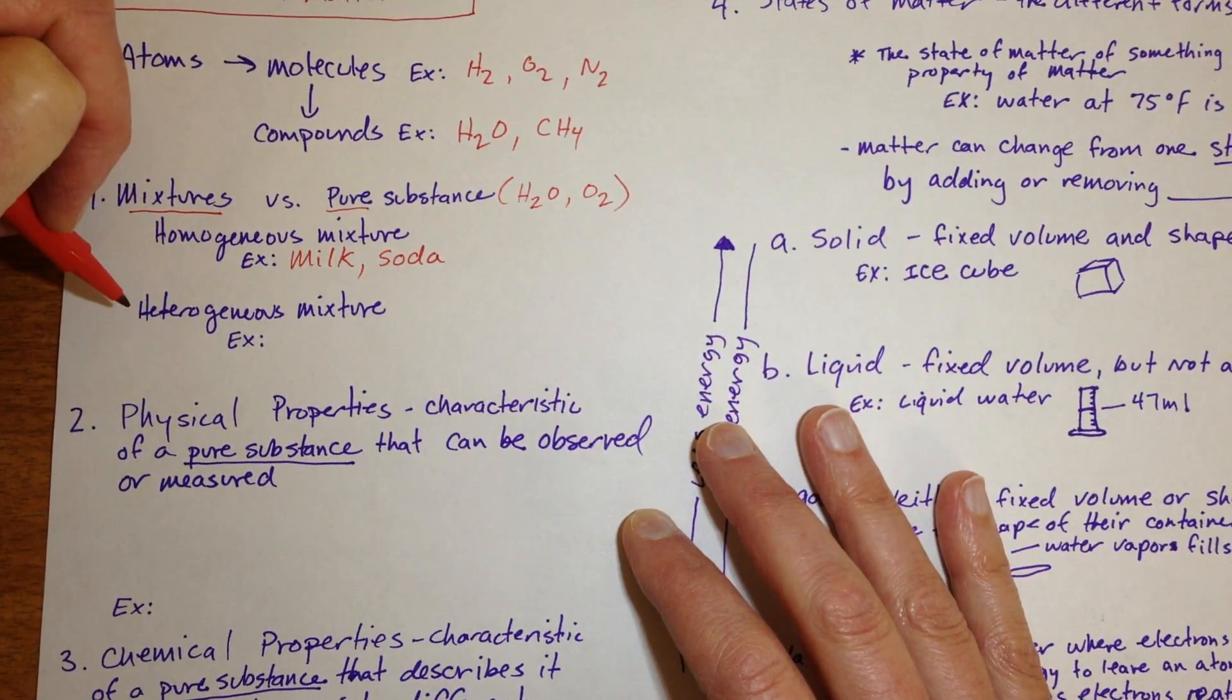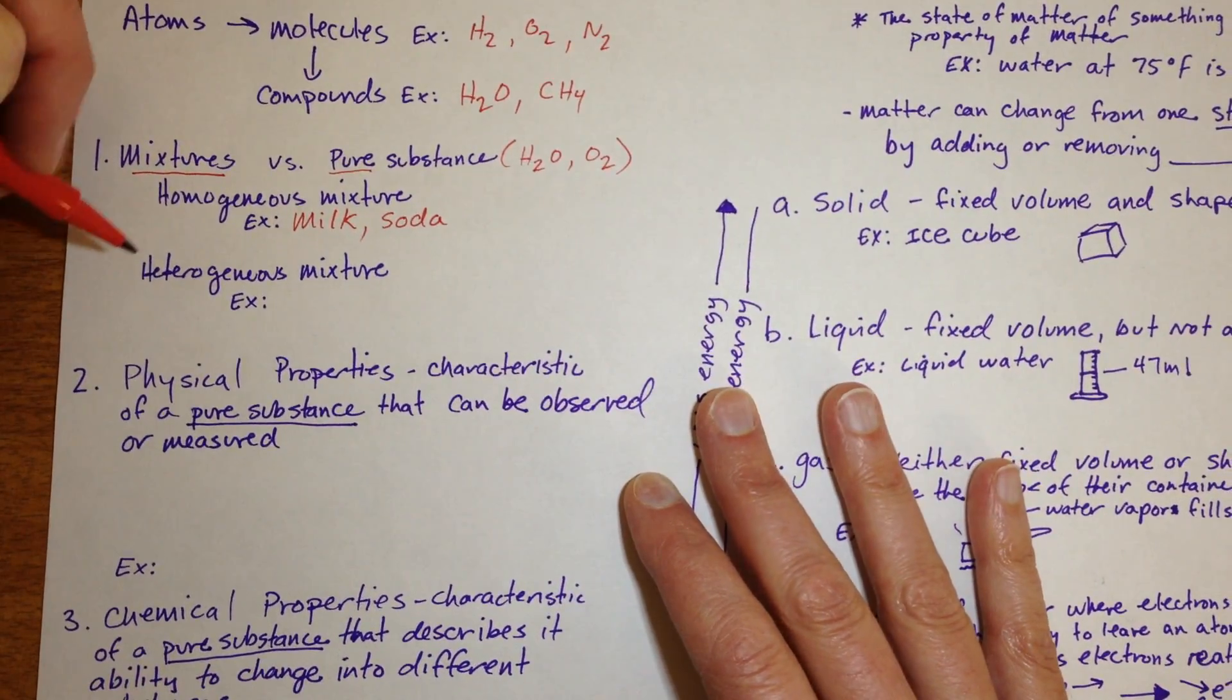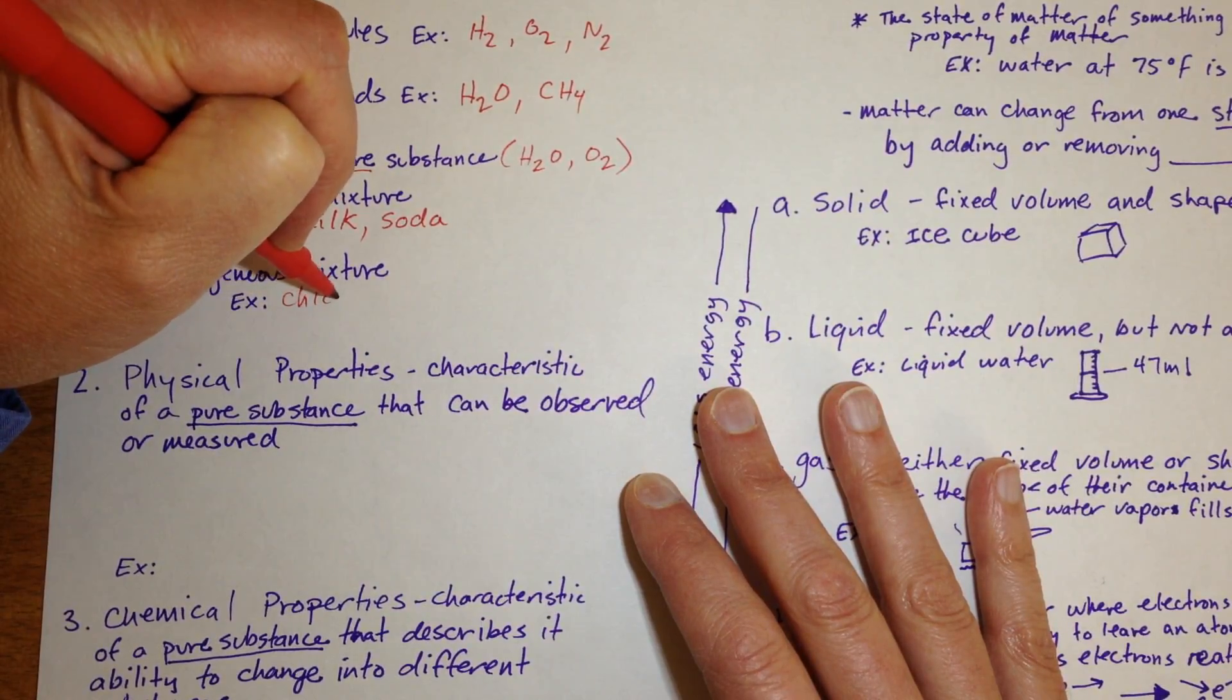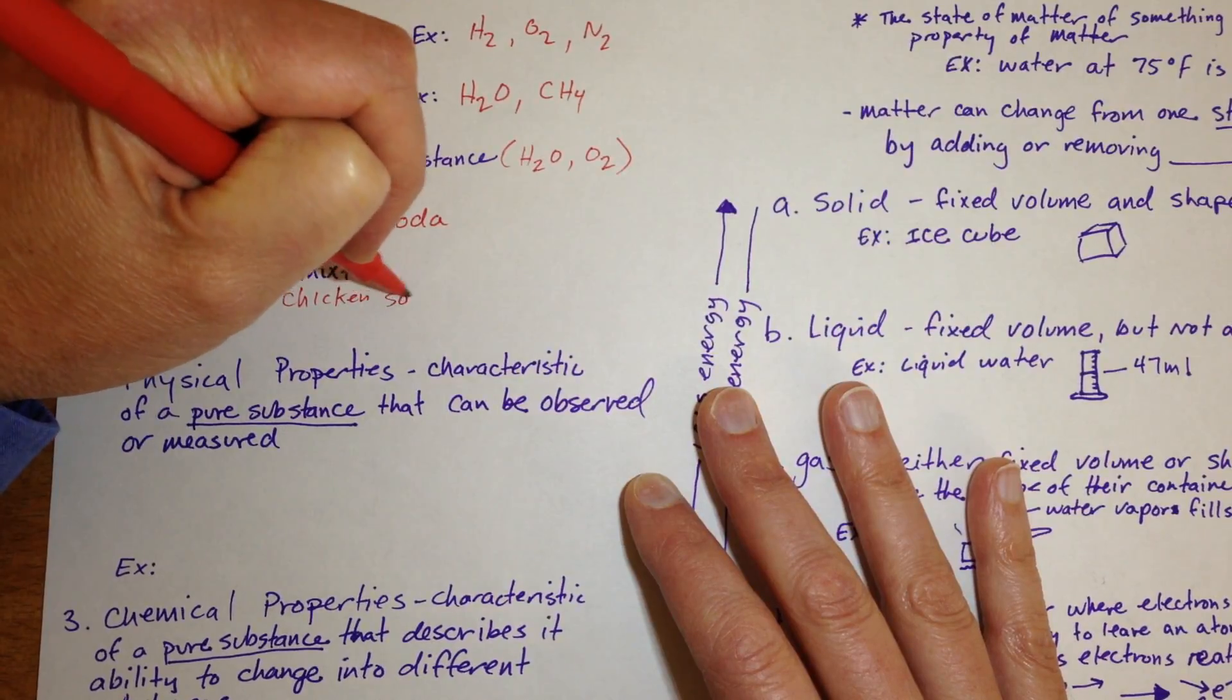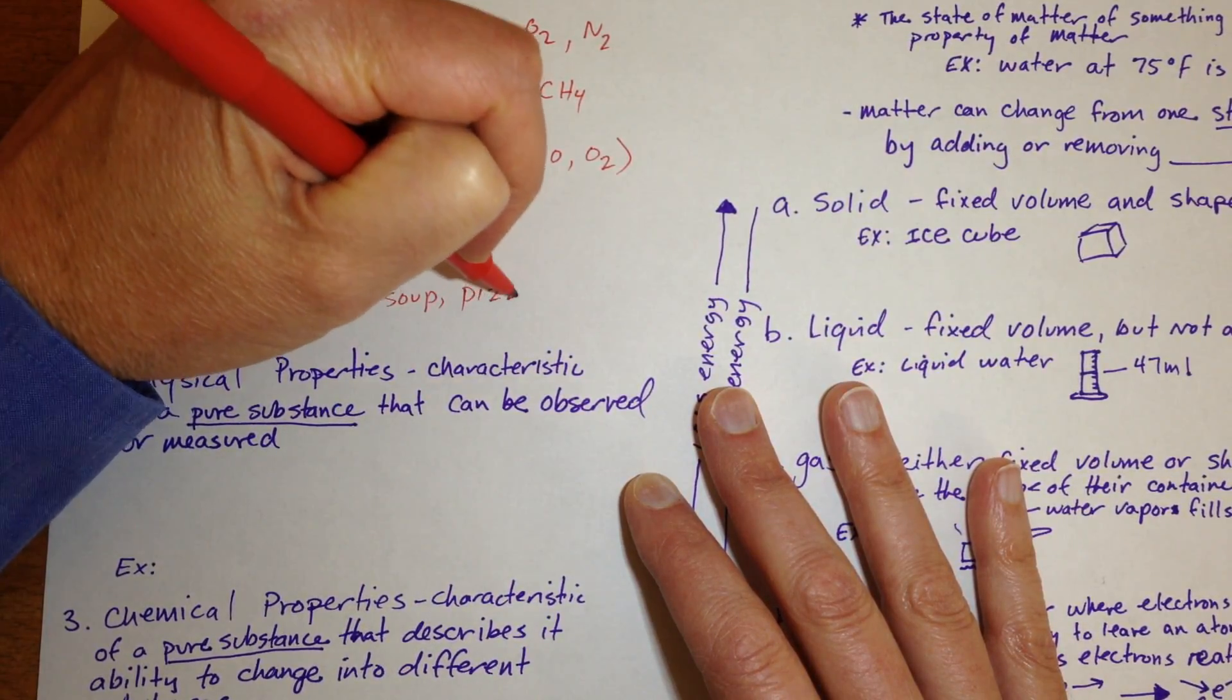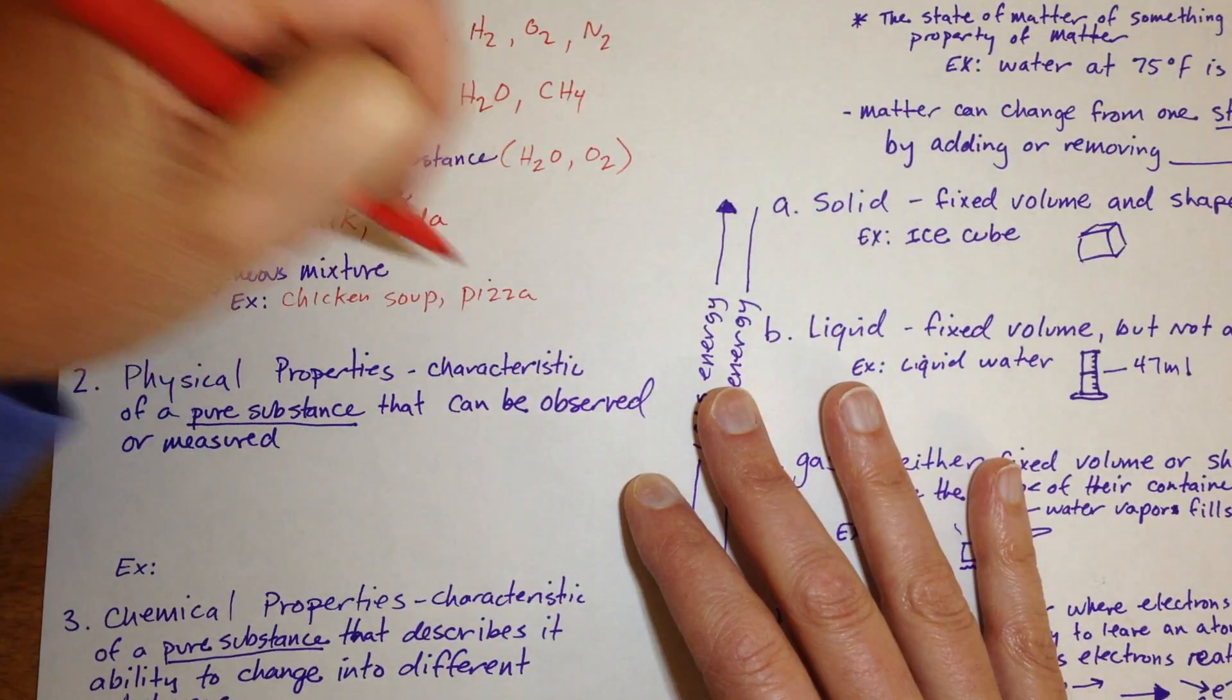On the other hand, a heterogeneous mixture is one that you can see the individual components. So like chicken soup, or maybe pizza with lots of different toppings, you can see the individual parts.